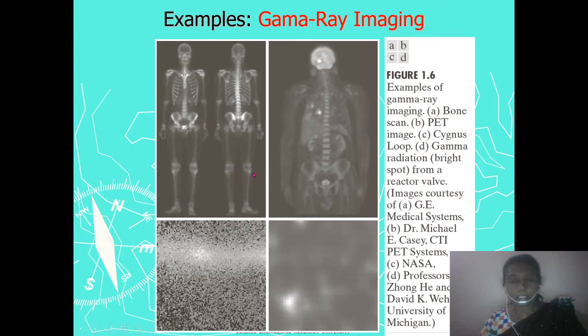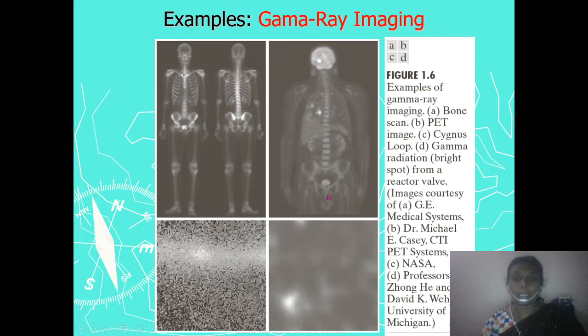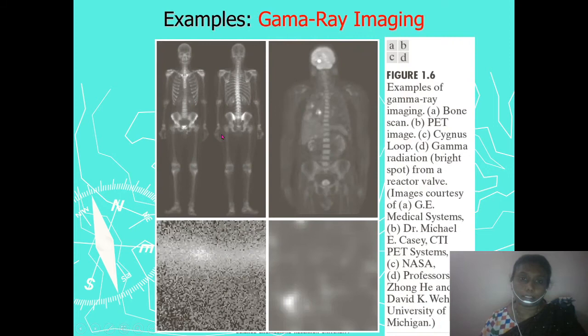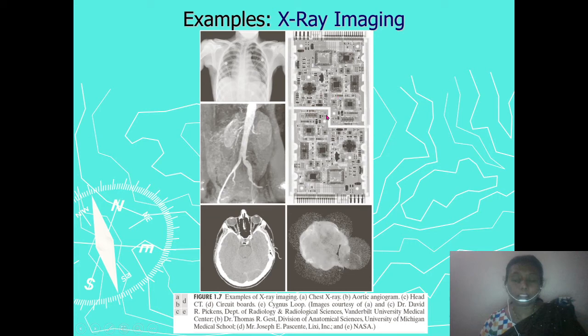Examples of gamma ray imaging include a bone scan, a PET scan, and a sinus image. Examples of X-ray imaging include a chest X-ray, a circuit board X-ray, a head section, and a sinus section. These are images produced by gamma ray and X-ray sources respectively.